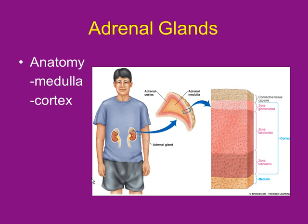Next gland: the adrenal glands, which sit on top of the kidneys. The outer edge is the cortex; the gooey center is the medulla. The three layers are: zona glomerulosa, zona fasciculata, and zona reticularis — put a number one, two, and three by each respectively. Number one the glomerulosa makes mineral corticoids, number two the fasciculata makes glucocorticoids, and number three the reticularis makes sex hormones — they match up.